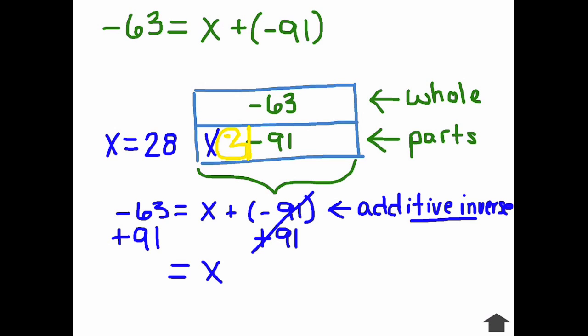Now, I'm going to take care of this negative 63 plus 91. When I have a negative and a positive, I'm going to take the larger number, subtract the small number. 91 minus 63 equals 28. Then keep the sign of the larger number. In this case, 91 is the larger number, which means that our answer is going to be positive. So x equals 28.